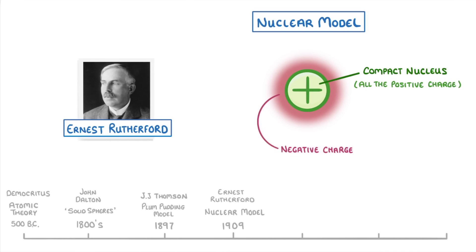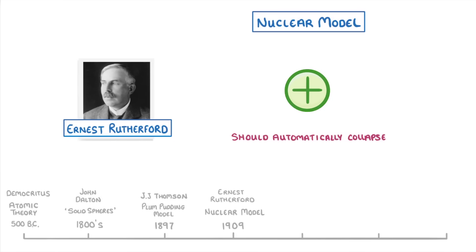At this point, Rutherford was already pretty close to how we currently understand the structure of the atom. But his model had one important flaw. Namely, there didn't seem to be anything stopping this cloud of negative electrons from rushing in towards the positive nucleus, meaning that the atom should just automatically collapse, which we know it doesn't.